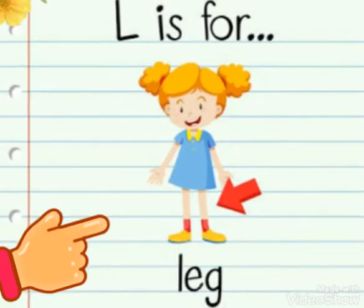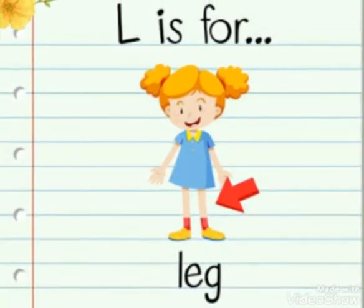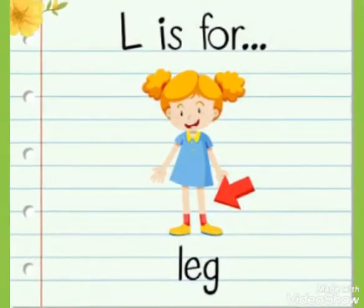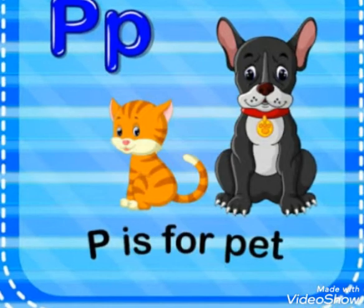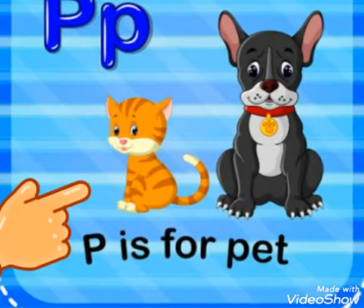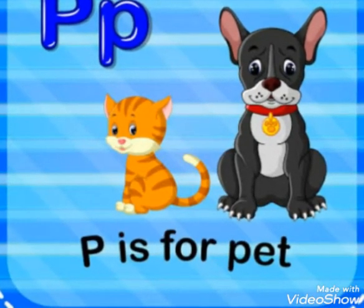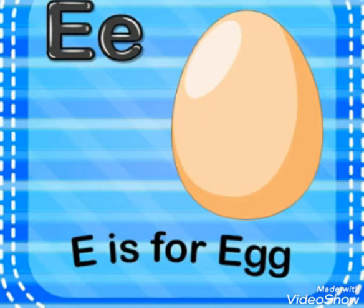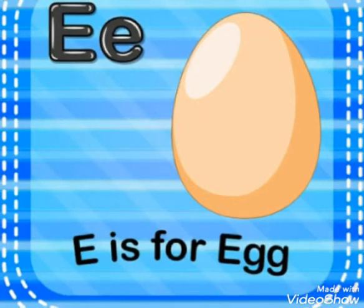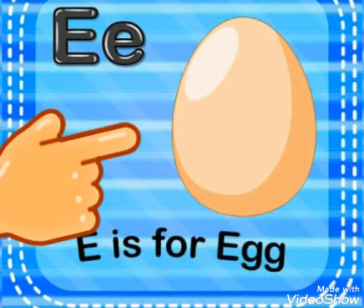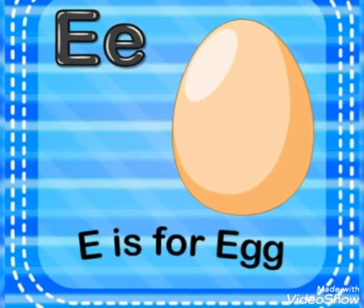L is for leg. P is for bat. E is for egg.